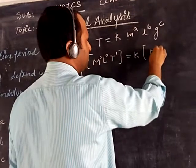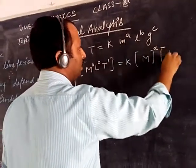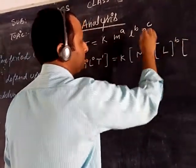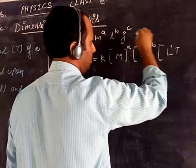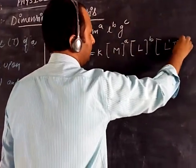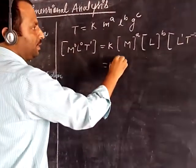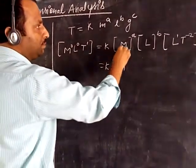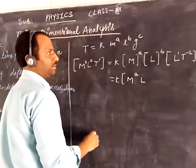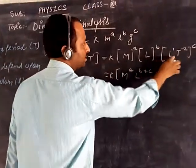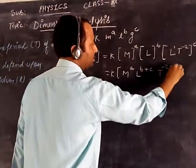The dimension for mass is M. The dimension for length is L. And the dimensions for acceleration due to gravity — we have already learned — is LT to the power minus 2, to the power c. So it is k, M to the power a, L to the power b plus c — when bases are the same, powers get added up — and T to the power minus 2c.